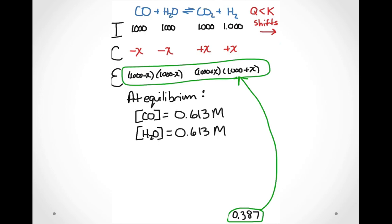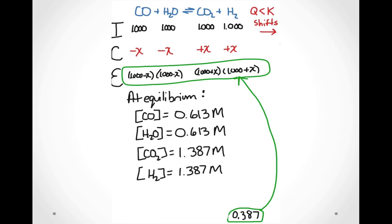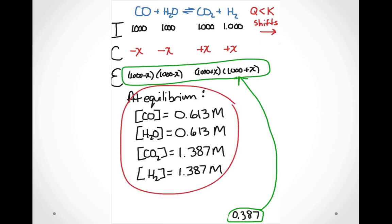This can then be substituted into the E row of our ICE table to determine the equilibrium concentrations of each species — that is, the equilibrium position. At equilibrium, the concentrations of carbon monoxide and water are 0.613 molar, and the concentrations of carbon dioxide and hydrogen are 1.387 molar.